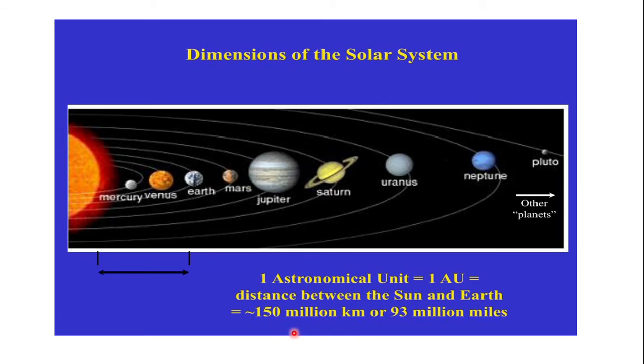We know that million is a huge number. So in order to represent that distance in million kilometres, we have taken 150 million kilometres as equal to 1 AU.